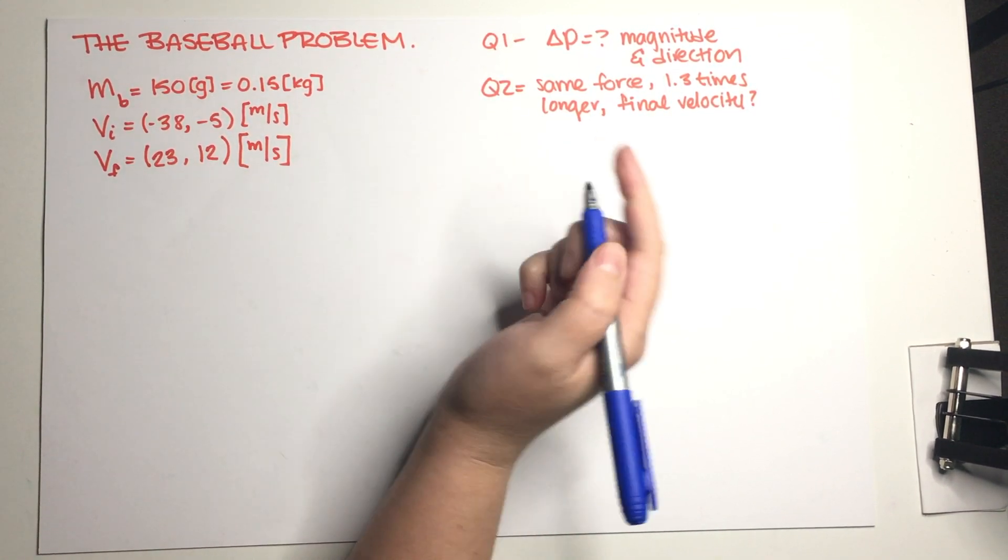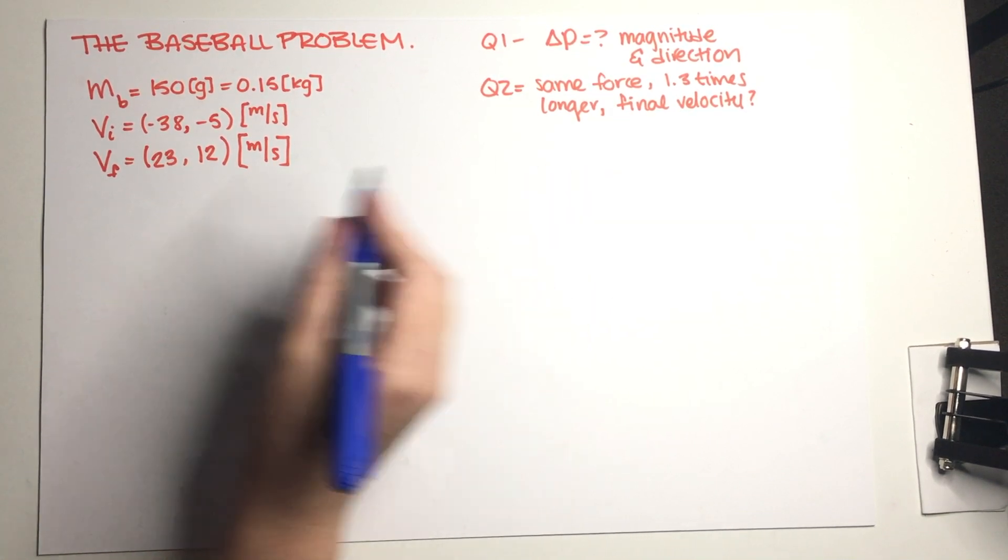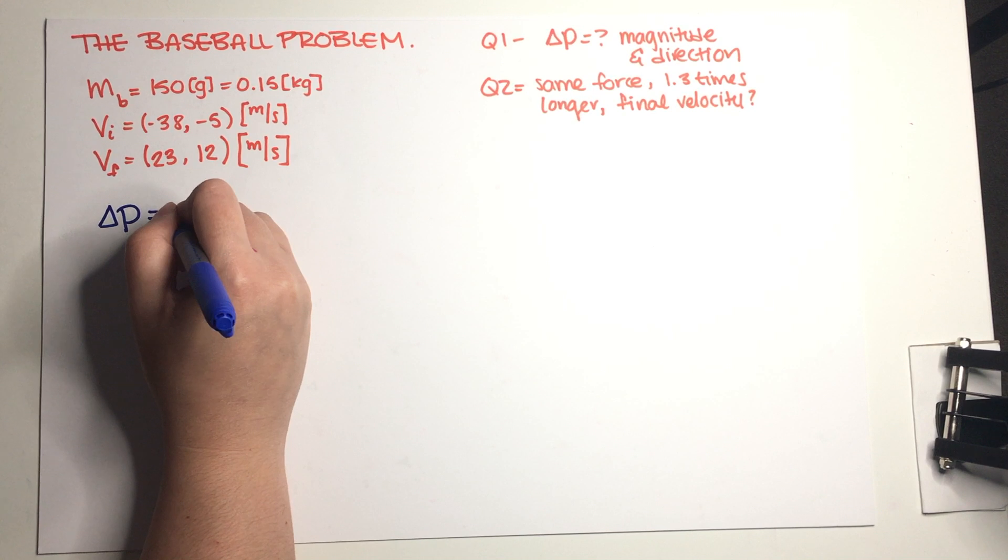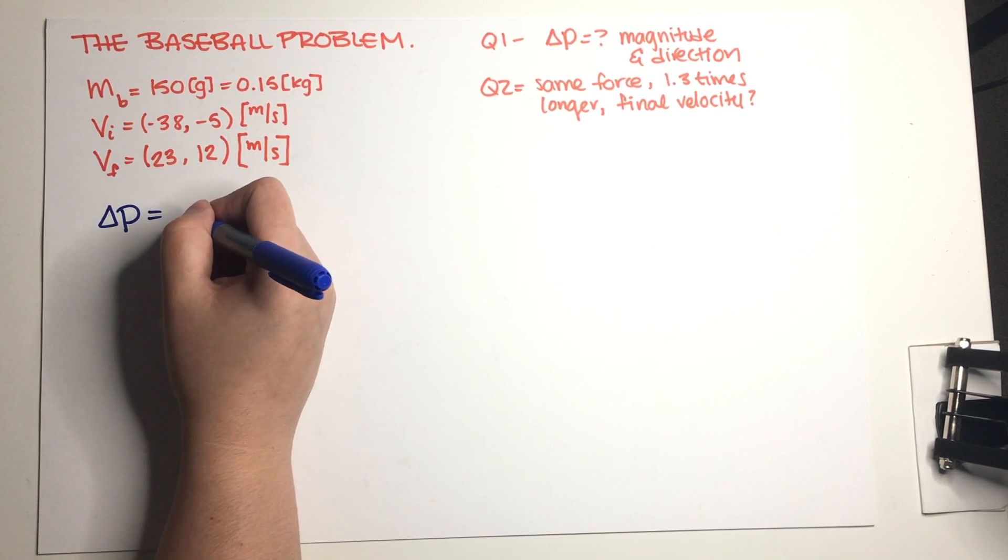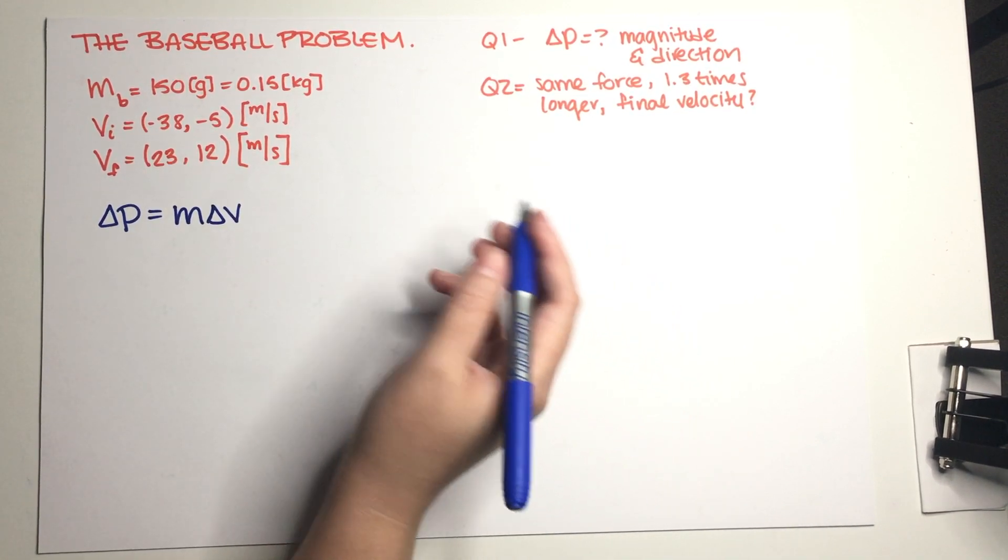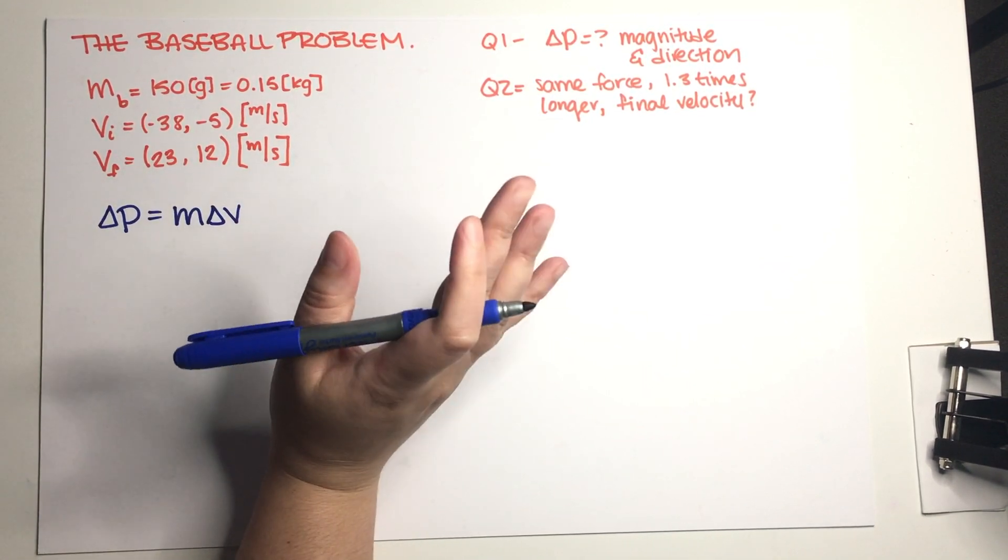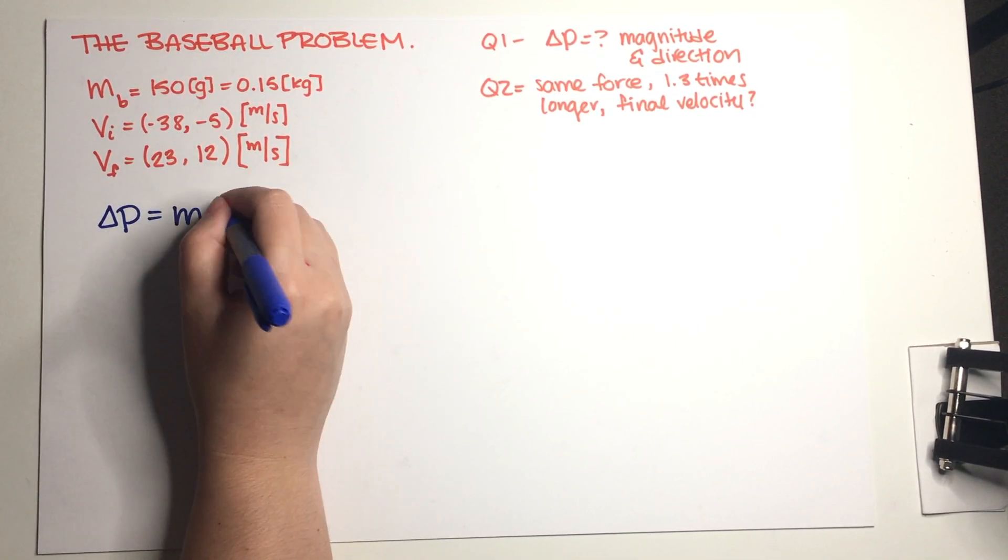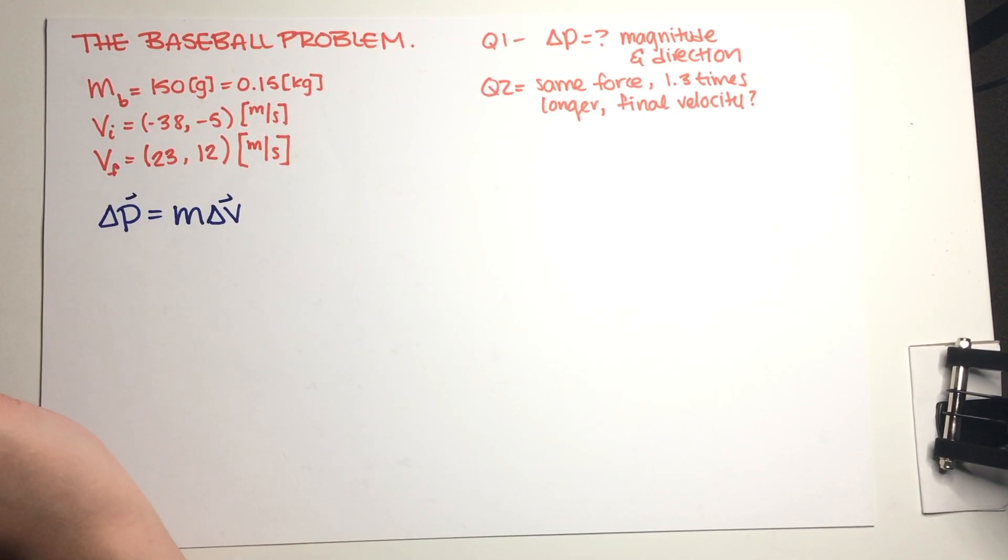So delta p, you know as we know, it's F_net times delta t, but it is also simply mass times a change in velocity, right? Given that the mass stays the same, which in this case the mass doesn't change, so we're good to use this equation.